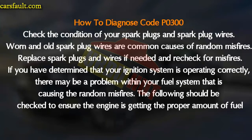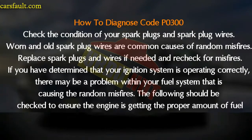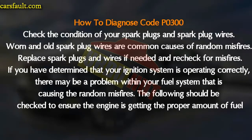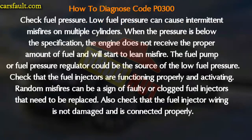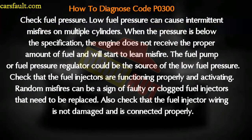If you have determined that your ignition system is operating correctly, there may be a problem within your fuel system causing the random misfiring. Check the fuel pressure — low fuel pressure can cause intermittent misfiring on multiple cylinders. When pressure is below specification, the engine does not receive the proper amount of fuel and will start to misfire. The fuel pump or fuel pressure regulator will be the source of low fuel pressure.